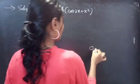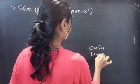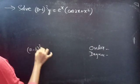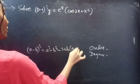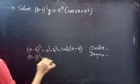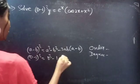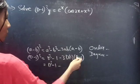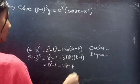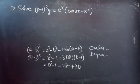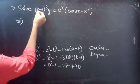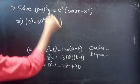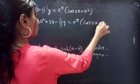Firstly, let's find the order and degree of the given differential equation. Let's expand (D minus 1) whole cube using the identity a minus b whole cube equals a cube minus b cube minus 3ab(a minus b). This gives us D cube minus 3D square plus 3D minus 1 into y equals to e power x into cos 2x plus x square.